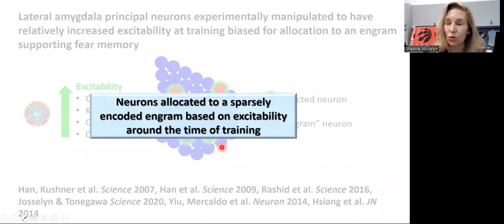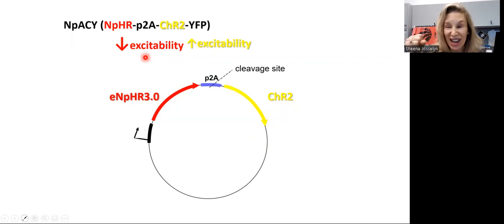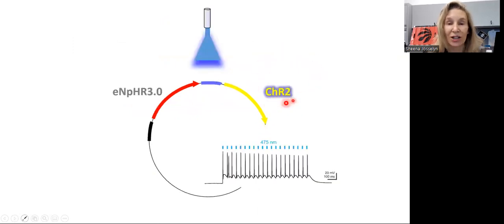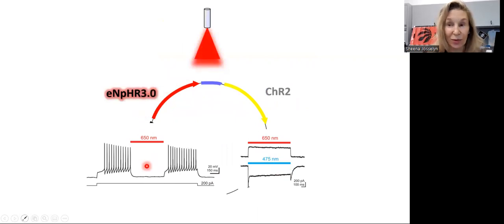But are these neurons really necessary? Are they critically involved? To test this, we used a very cool optogenetic construct which allows us to increase and decrease the excitability of the same population of infected neurons using two different optogenetic constructs. If we shine a blue light, we hit channelrhodopsin — an excitatory construct — and increase the activity of these neurons. If we shine a red light, we hit halorhodopsin and silence these neurons. We did this in the lateral amygdala to show that these neurons are critically important for later retrieval of the fear memory.